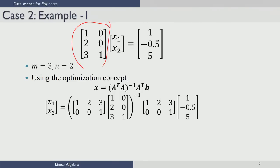The third equation — 3x1 plus x2 — irrespective of whatever value you get for x1, you can always use it to calculate a value for x2. However, we cannot solve this set of equations. Let us see what solution we get by using the optimization concept described in the last lecture. We said x equal to A-transpose A inverse A-transpose B.